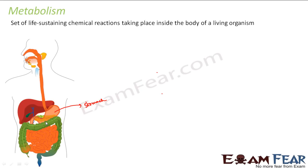Similarly, after the stomach, the food passes to the small intestine. There also digestion happens. There is a pancreas and a liver. From the pancreas come other enzymes called pancreatic amylase and pancreatic lipase, which help in digestion of starch and fat. From the liver comes the bile juice which activates the pancreatic and intestinal enzymes. So these enzymes act on the food material and help in digestion. Continuously inside our body, some or the other chemical reaction is taking place.